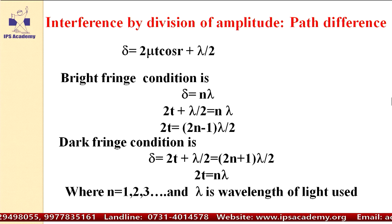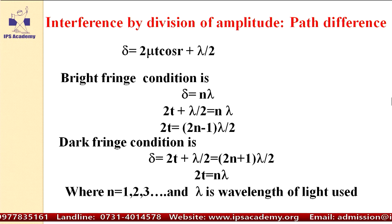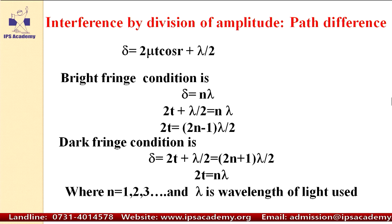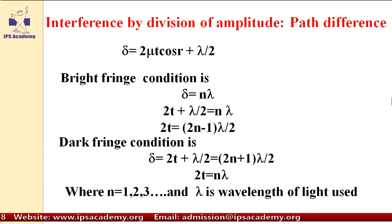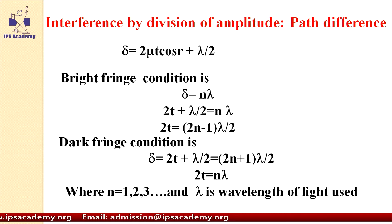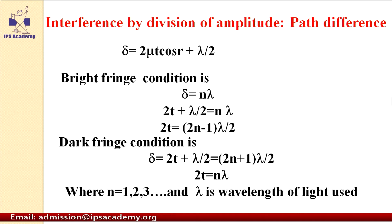We will now calculate the condition of bright fringe — that is constructive interference — and the condition of dark fringe — that is destructive interference. Since light falls normally to the medium, the angle of refraction R is always 0. In the equation delta = 2μT cos(R), R equals 0, so cos(R) equals 1. Therefore, the path difference becomes 2μT + λ/2.